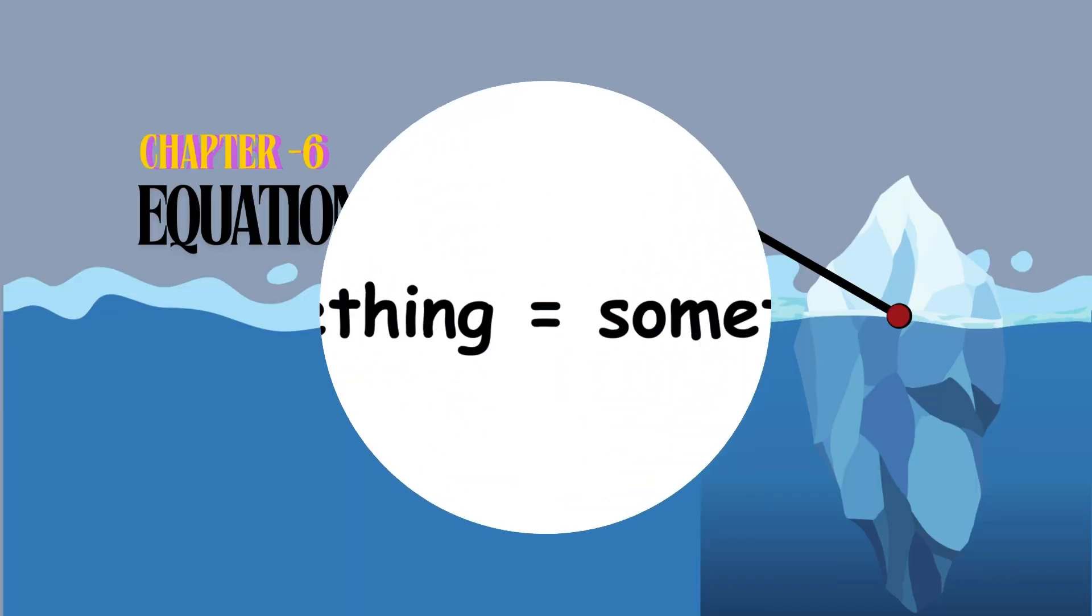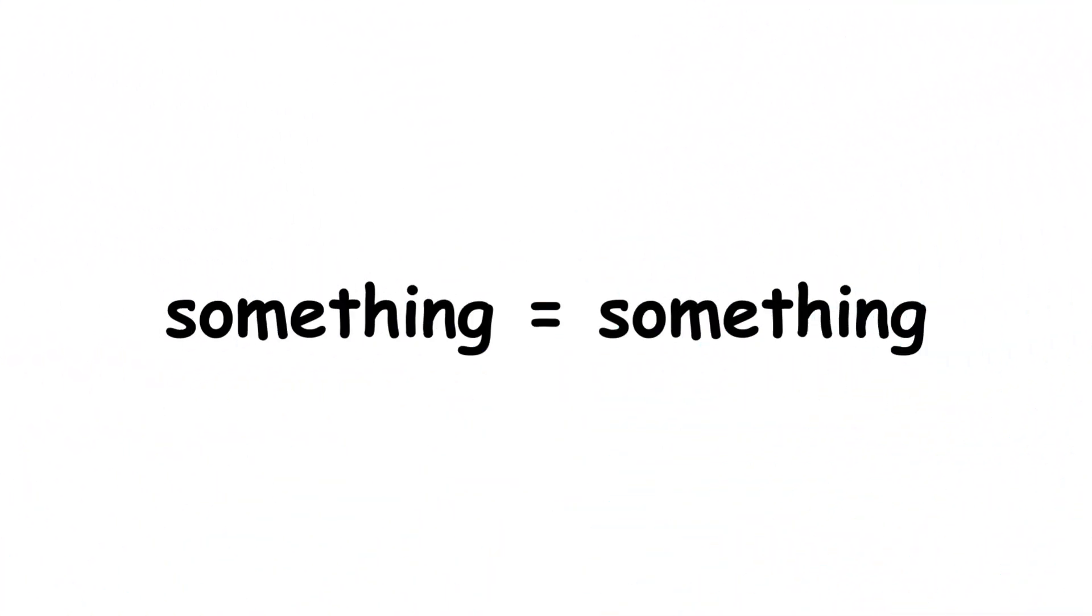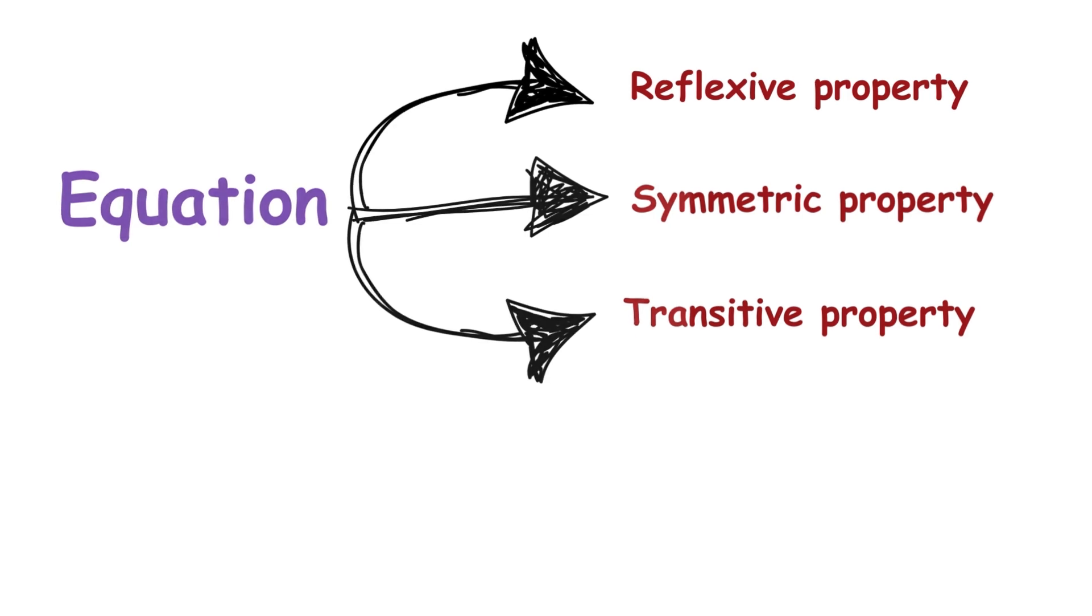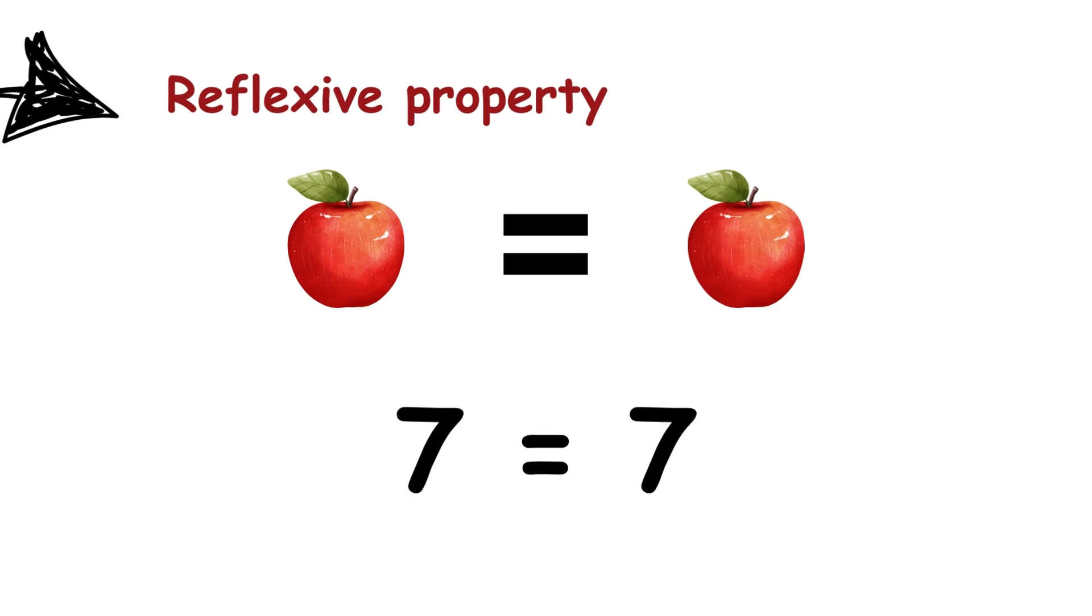Equation. An equation is a statement that two expressions have the same value. For example, two plus two equals four is an equation. Equations have three basic properties. One, reflexive property. Anything is equal to itself. For example, seven equals seven.